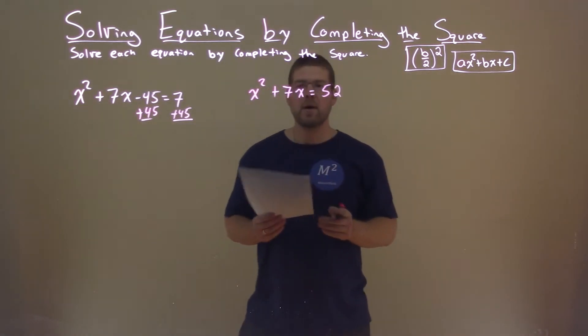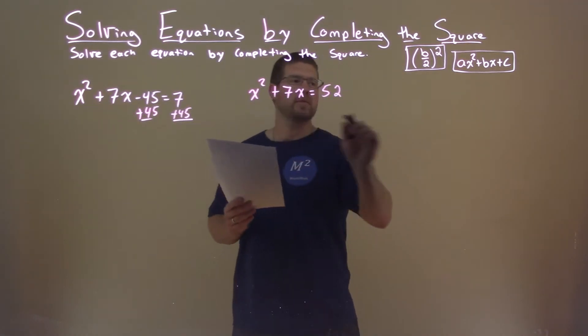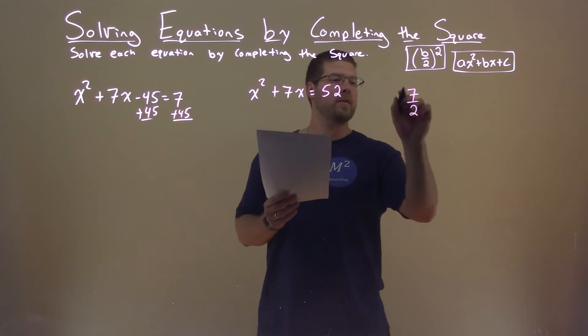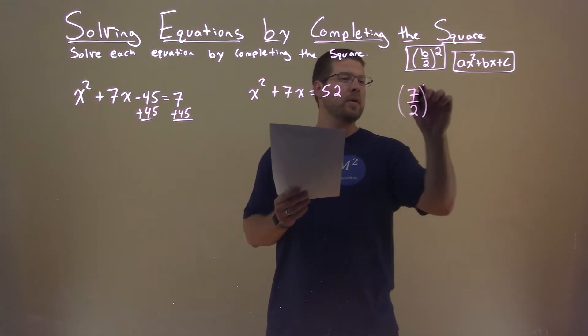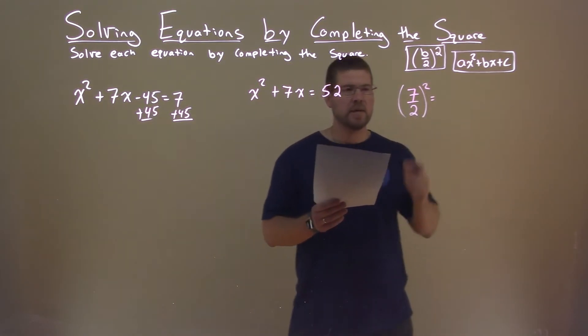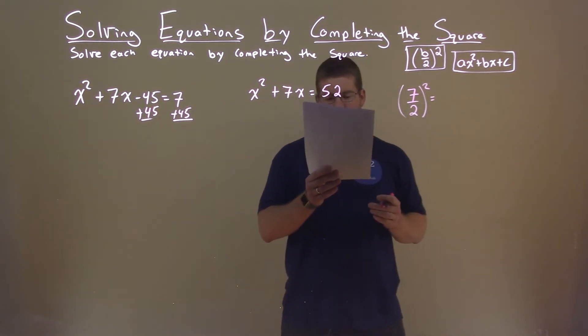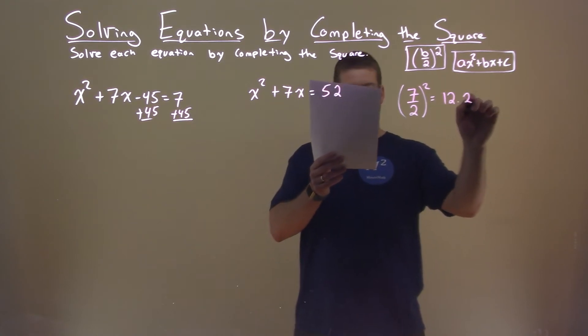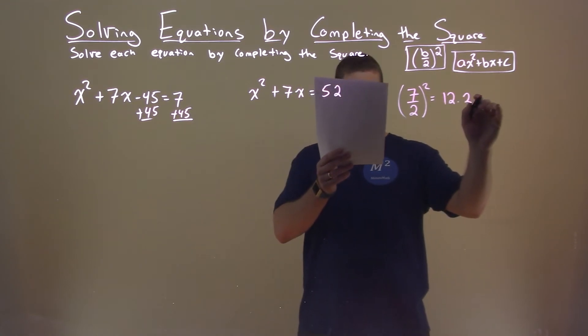So now I'm looking at my b value, which is 7. I'm going to divide that by 2, and I'm going to square it. 7 divided by 2, all squared, is 12.25.